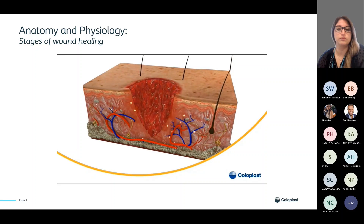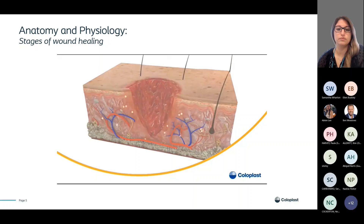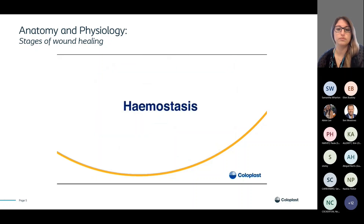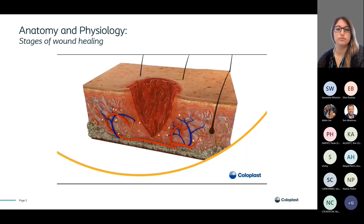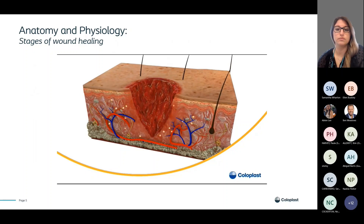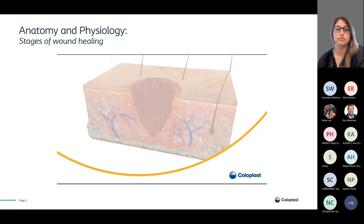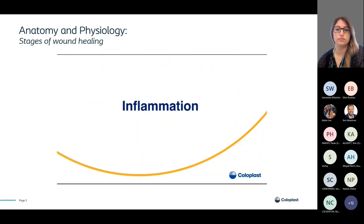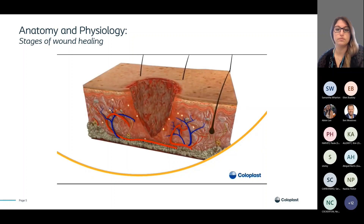In every wound type, the healing process runs through a cascade of phases which partly overlap in time. The immediate reaction to injury is a contraction of the capillaries to reduce bleeding. Red blood cells and platelets released from damaged blood vessels flow into the wound, aggregate, and produce cells to plug or clot the wound.